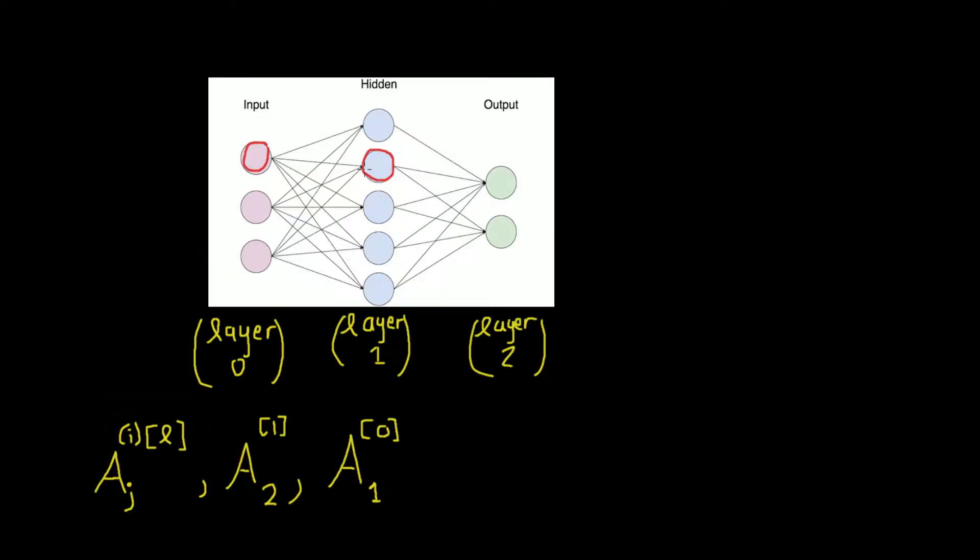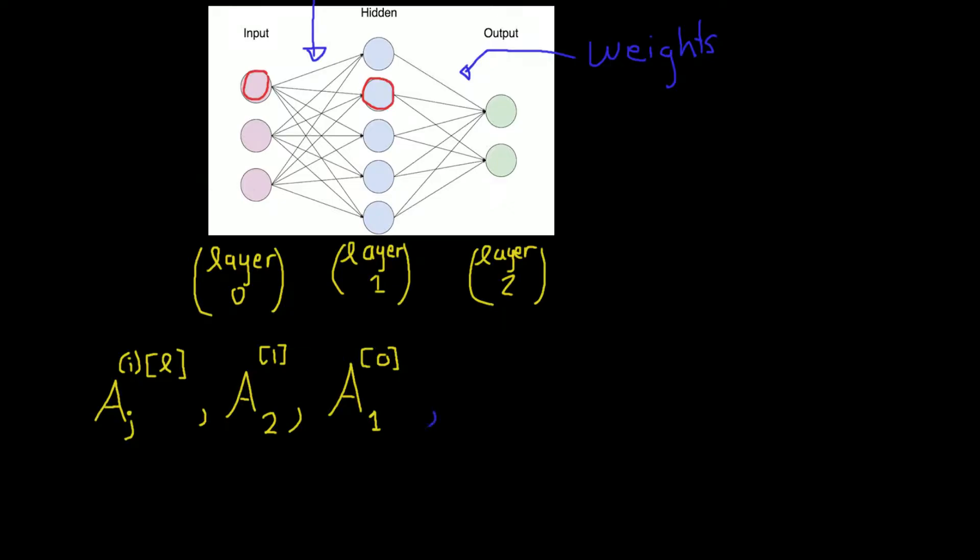Now, one thing we have in between the layers are weights. We have them from layer 0 to layer 1, as well as from layer 1 to layer 2. And we need to have some type of notation to refer to these weights as well. So I will write W of a specific layer.